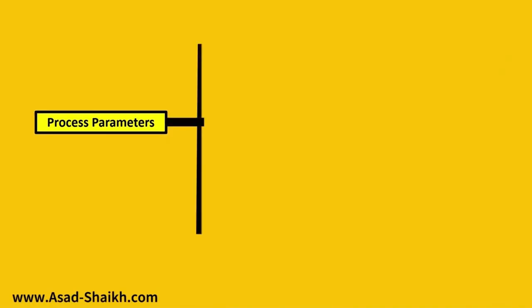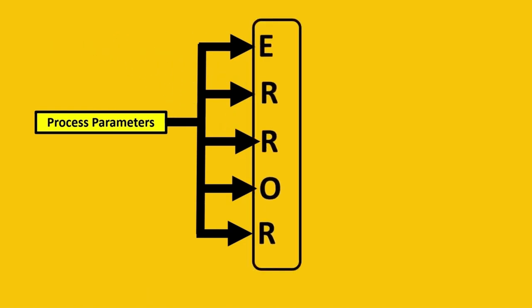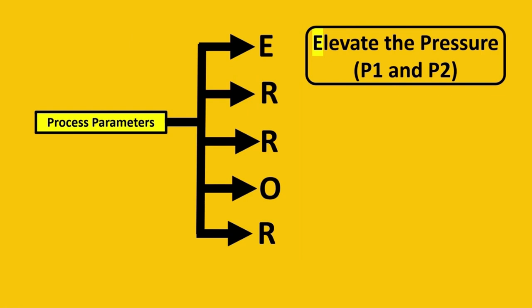Now we'll see the process parameters. They can be divided into five solutions, but you can remember this with a simple acronym which is ERROR. The first E stands for elevate the pressure P1 and P2.